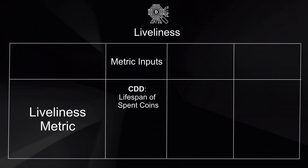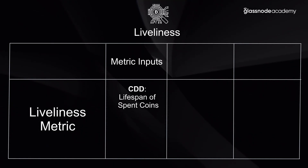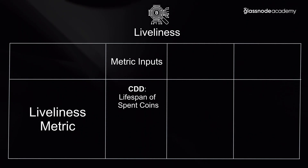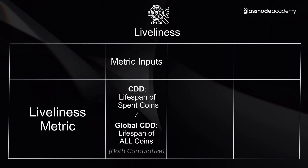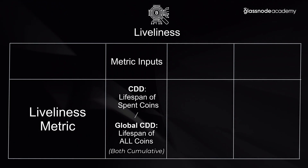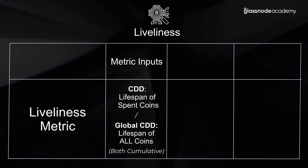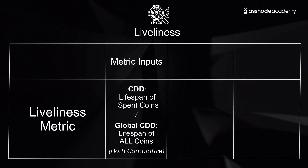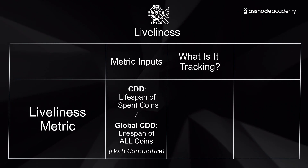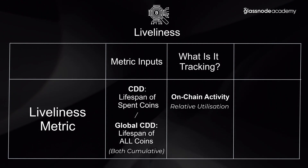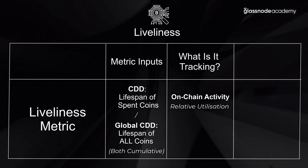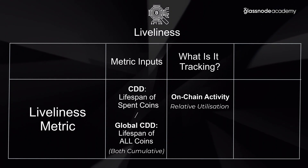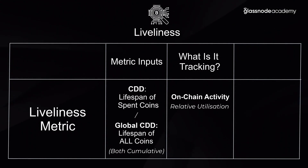To understand the metric inputs: we're looking at coin days destroyed, which is a combination of both time and coin volume — the lifespan of all spent coins. It takes the ratio of the global coin days destroyed to the cumulative sum of circulating supply, looking at the lifespan of all coins. This allows us to actually compare between different protocols — Bitcoin versus Litecoin or any other chain — and understand the relative utilization of those chains relative to their overall lifespan.